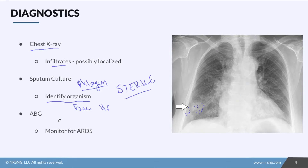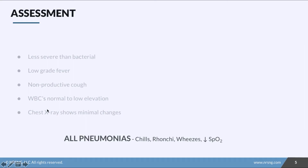The other diagnostic you'll see for pneumonia patients is an ABG. As discussed in the ARDS lecture, pneumonia is one of the main causes of ARDS. Knowing this patient is at risk, we keep an eye on the PF ratio to monitor for the development of ARDS. So the big diagnostics are chest x-ray, sputum culture, and ABG.